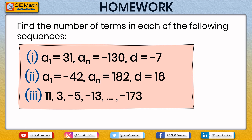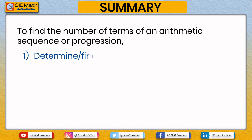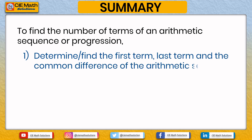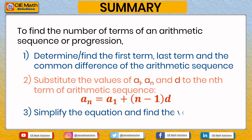In summary, to find the number of terms of an arithmetic sequence or progression: first, determine the first term, last term, and the common difference of the arithmetic sequence. Second, substitute those values into the nth term formula, which is an equals a1 plus n minus 1 times d. Third, simplify the equation and find the value of n.